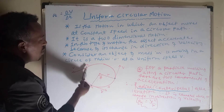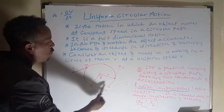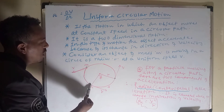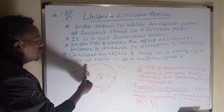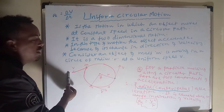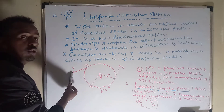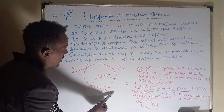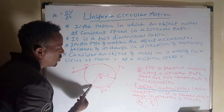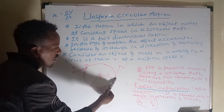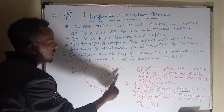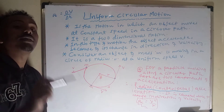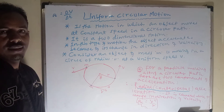A particle of mass m is moving along a circular path. At any point along the path, the direction of velocity is tangent to the circle. When the object is at different positions on the circle, the direction of velocity changes, but it is always tangent to the circular path.